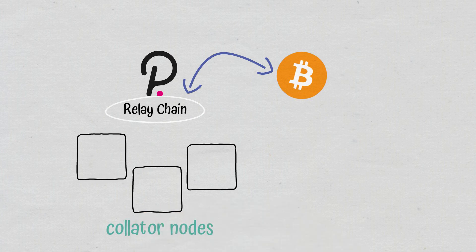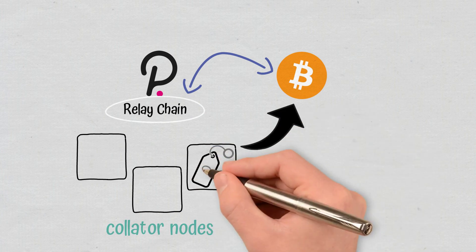They are meant to gather information in a block, for example, the Bitcoin price from its blockchain, and send it to the main chain.